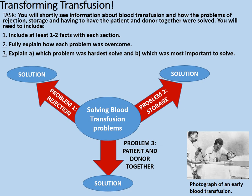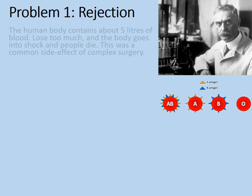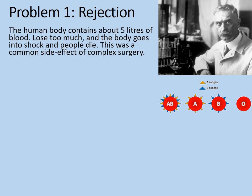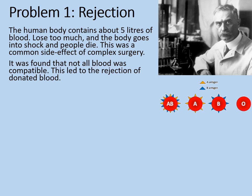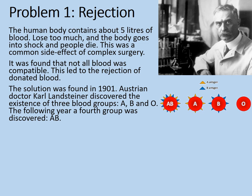Let's move on to problem one: rejection. The human body contains about five litres of blood. Lose too much, and the body goes into shock and people die — a common side effect of complex surgery, not to mention World War I wounds. It was found that not all blood was compatible, which led to the rejection of donated blood. The solution was found in 1901, when Austrian doctor Karl Landsteiner discovered the existence of three blood groups: A, B, and O.